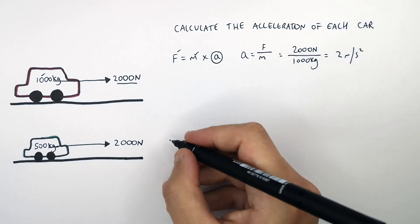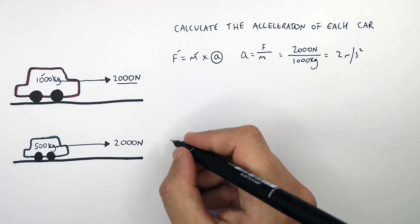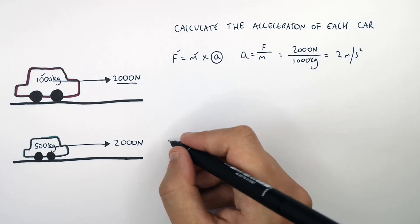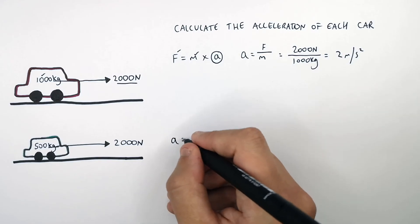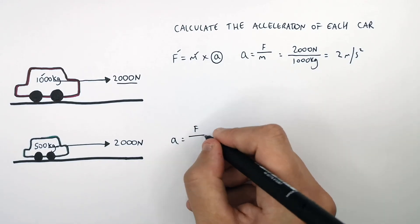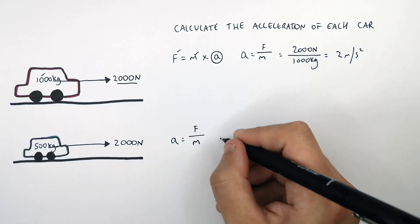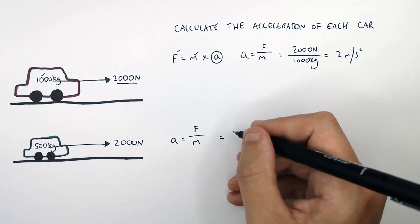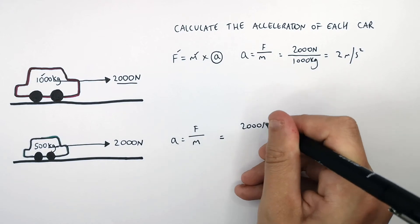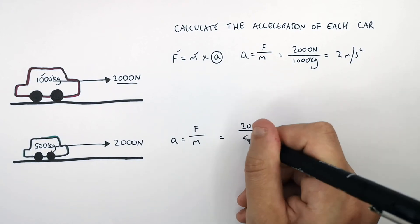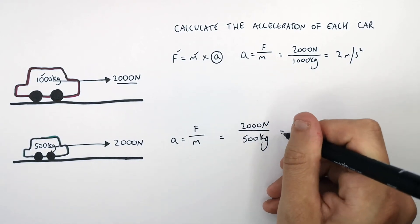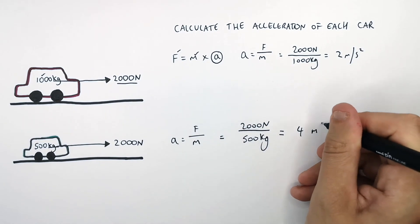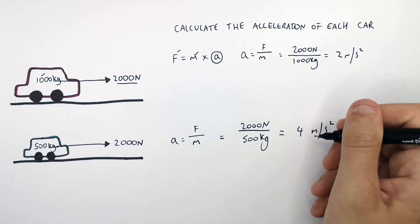For the smaller car with a lower mass of 500 kilograms, we want to work out the acceleration. Acceleration equals force divided by mass. Substituting the numbers: 2000 newtons divided by 500 kilograms gives an acceleration of 4 meters per second squared.